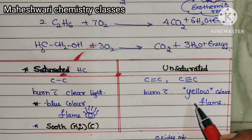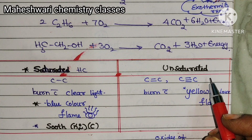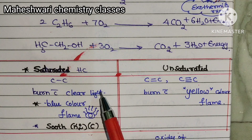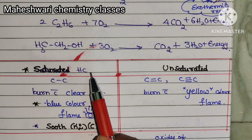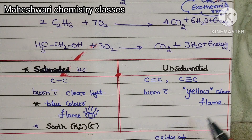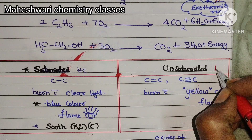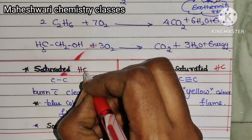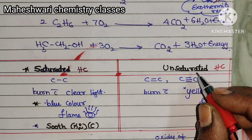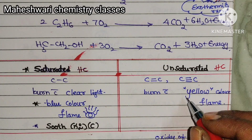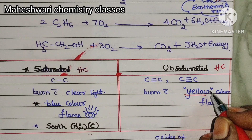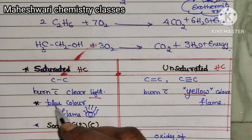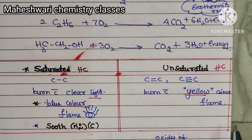Unsaturated hydrocarbons burn with a yellow or sooty flame, while saturated hydrocarbons burn with a light blue color flame.